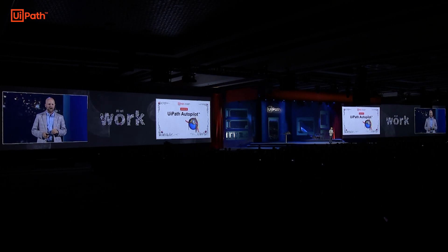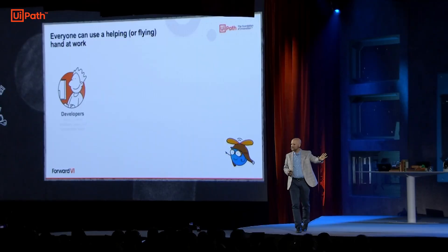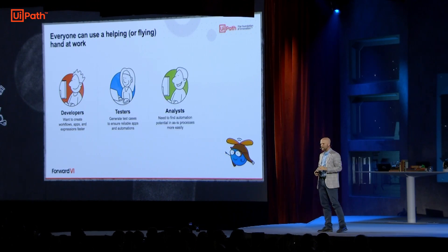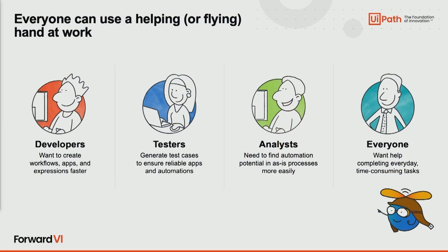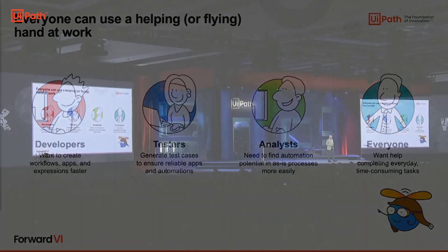UiPath Autopilot is an amazing set of capabilities, and it's going to help improve the lives of developers, testers, and analysts. Everyone from the intern to the CEO will be able to make use of Autopilot and the capabilities it brings to the UiPath automation platform — and do things that never before were possible. To show you some of this, let's start with the developers and what we're doing in UiPath Studio for workflows, apps, and expressions. I'd like to welcome to the stage Nupur Anani to show you something we used to call Project Wingman.